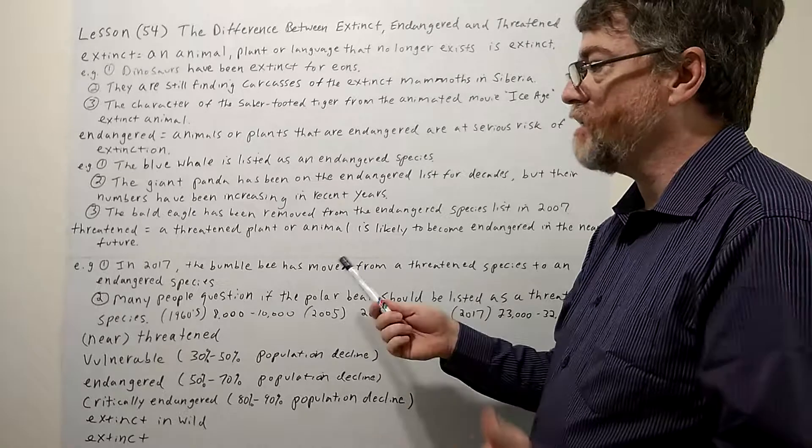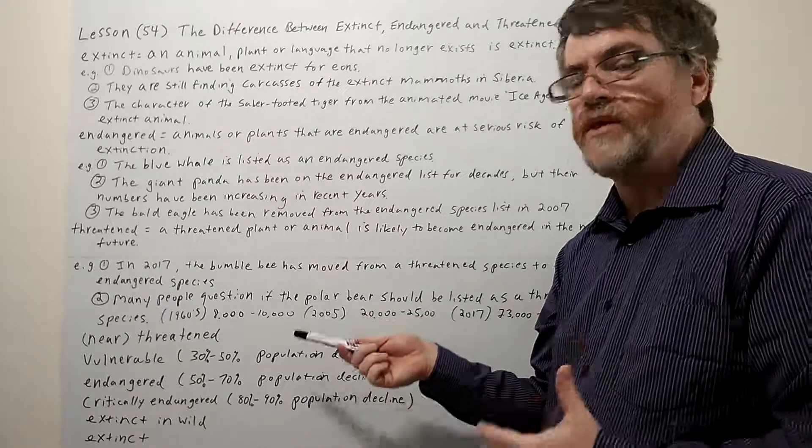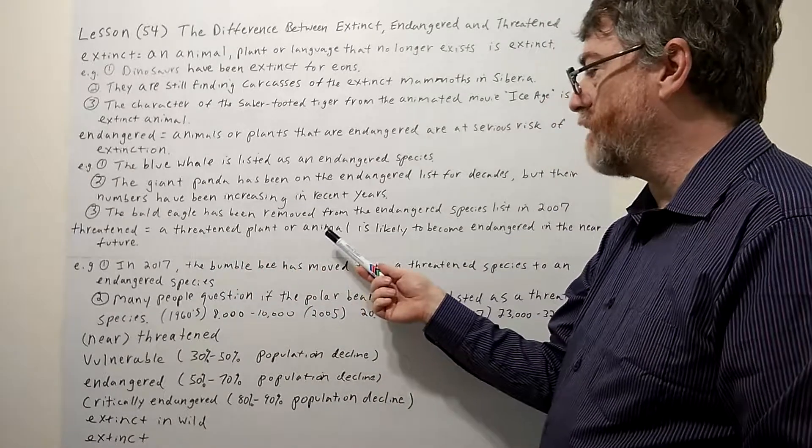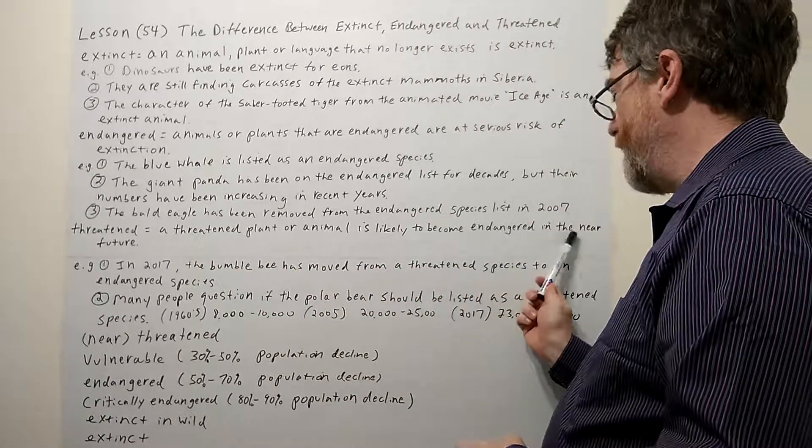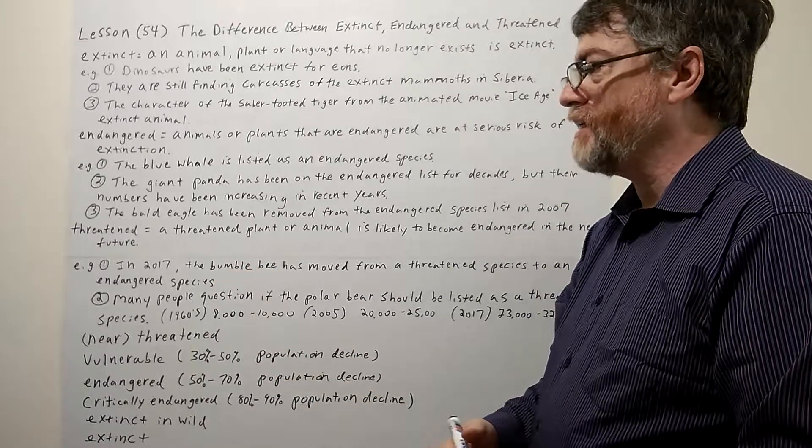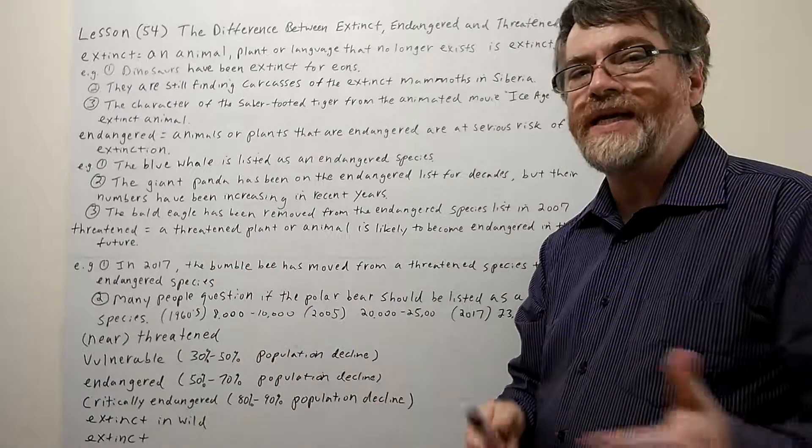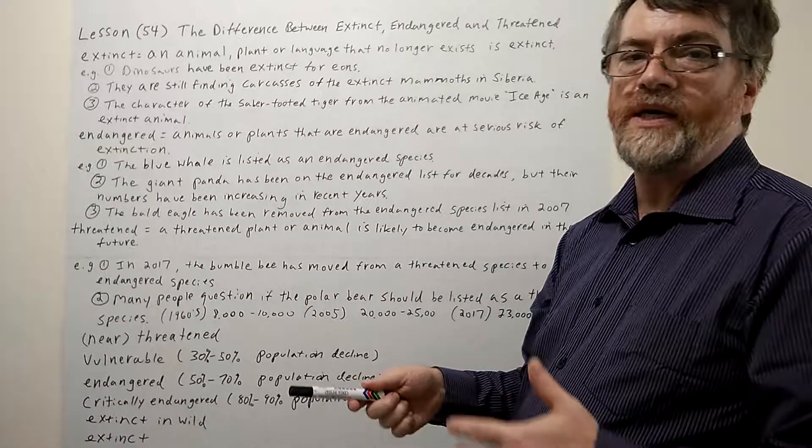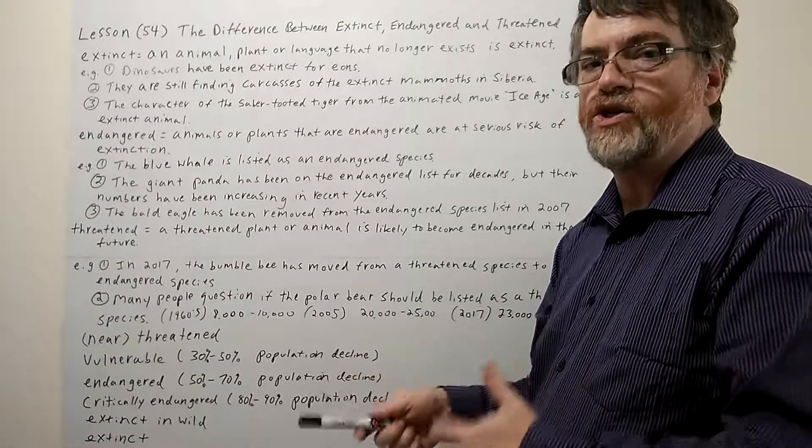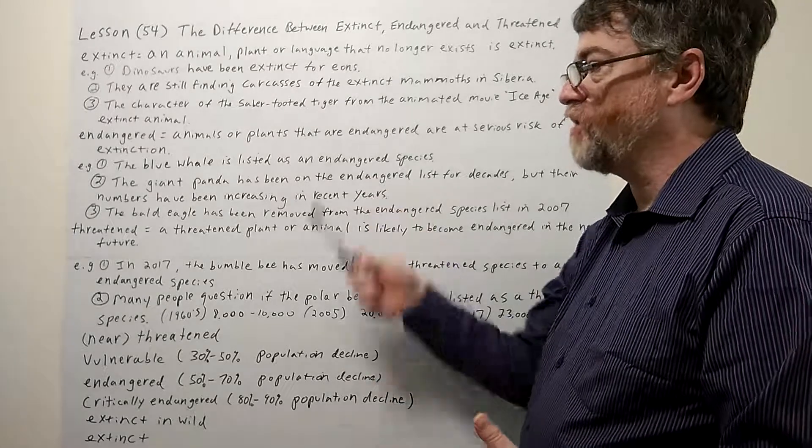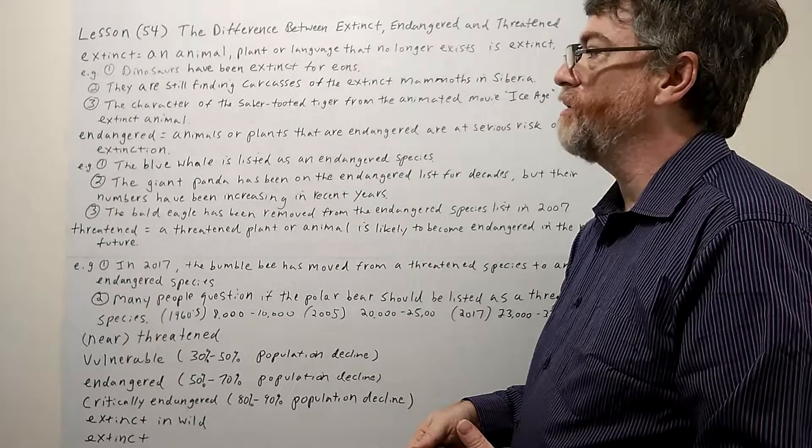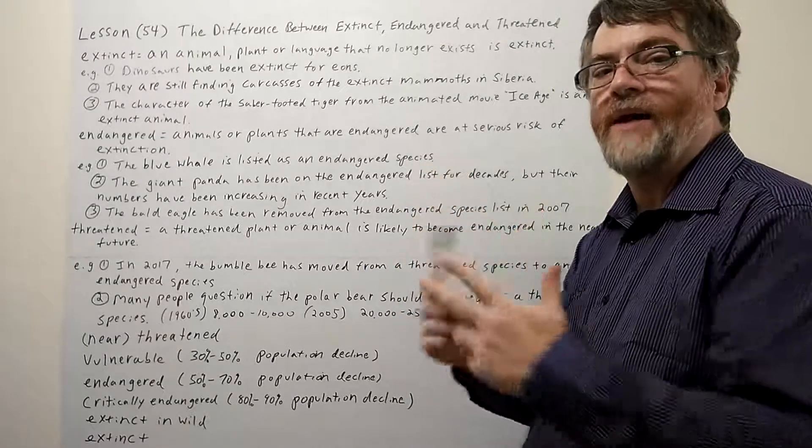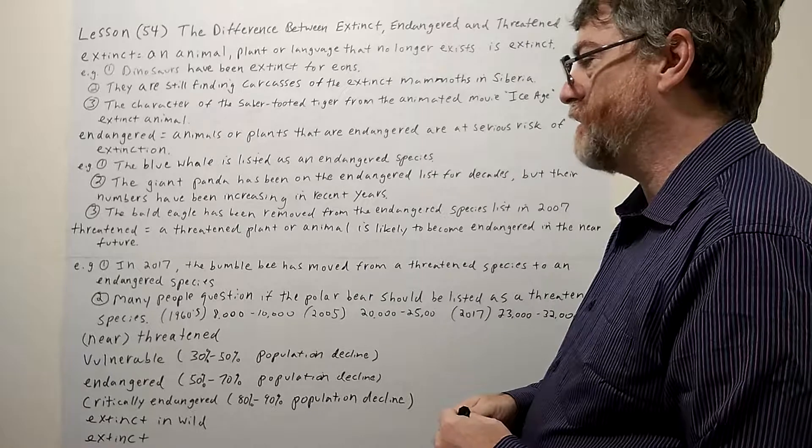So let's take a look at this next one that we sometimes hear about: threatened. A threatened plant or animal is likely to become endangered in the near future. So this is even a category before it. So they're not endangered yet, their numbers are not low enough to really be on the endangered list. So threatened is even much further back. So you have extinct, you have endangered, and then you have threatened going back that way.